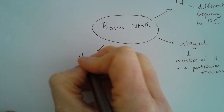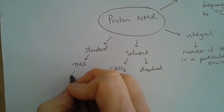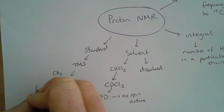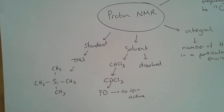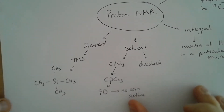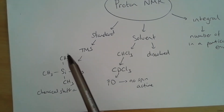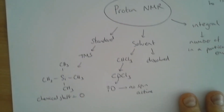We again use TMS (tetramethylsilane) as a standard. It consists of a silicon atom with four methyl groups around it. It's a very stable compound, and these hydrogens — as well as the carbons — are very shielded due to a positive inductive effect pushing electron density from the silicon towards the methyl groups. This means TMS has some of the most highly shielded hydrogens, giving a chemical shift standardized to zero, and it produces a single sharp peak due to molecular symmetry.